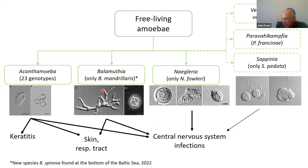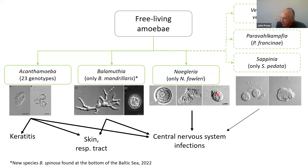Both Acanthamoeba and Balamuthia only have trophozoite and cyst forms. The third important species, Naegleria fowleri, is the only pathogenic Naegleria species, responsible for primary amoebic meningoencephalitis. This species has trophozoite and cyst forms and, importantly, a free-swimming flagellated form which swims in water — providing a means of acquiring the infection.